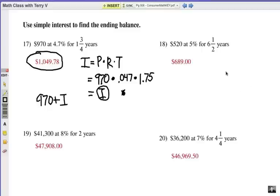Number 18. Did you get it right? You're going to take 520 times .05 times 6.5, which is six and a half years. You're going to get that as your interest answer, and then you're going to add it on to 520. Hope you got that right.